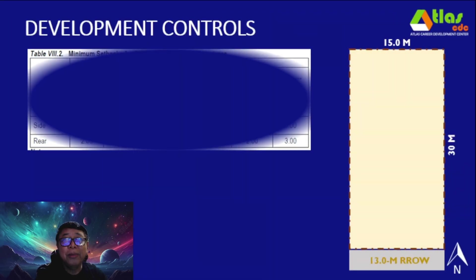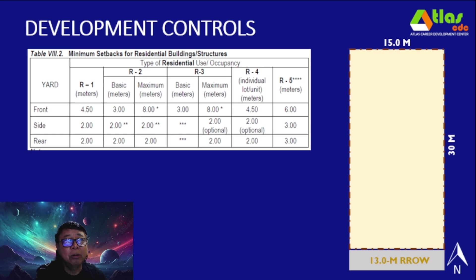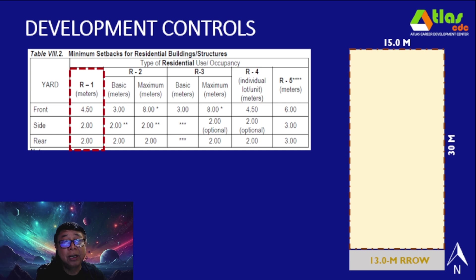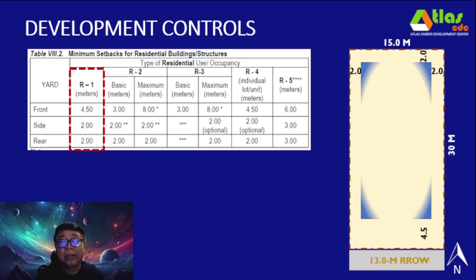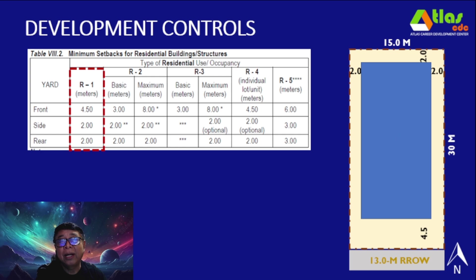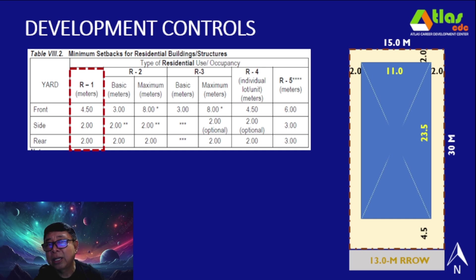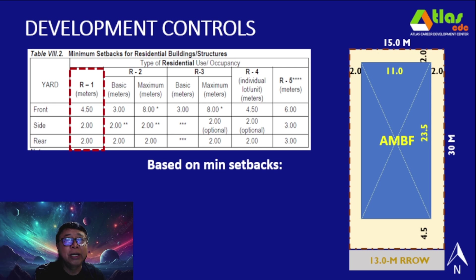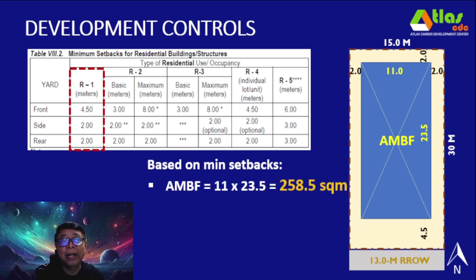In determining the AMBF and the maximum PSO, our first factor to consider is the minimum setbacks as provided in Table 8.2. For R1, the front setback is 4.5 meters, and the side and rear will have a minimum of 2 meters. Applying these minimum setbacks to the lot, the maximum building dimension will be 11 meters by 23.5 meters, giving an AMBF of 258.5 square meters.